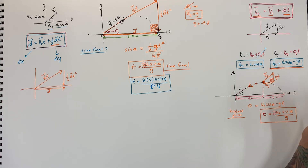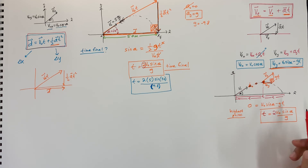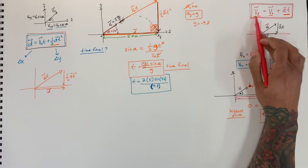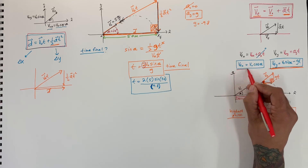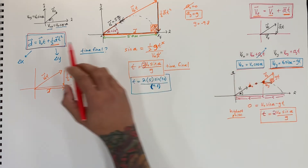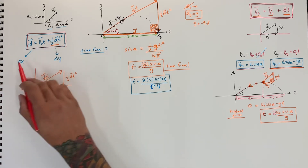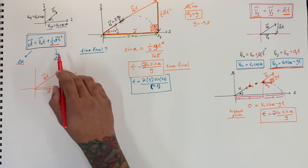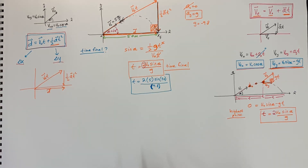So these two equations — the displacement vector equation and the velocity vector equation — are the most important tools for projectile motion problems. Let's do some more examples to get comfortable. Remember: the velocity equation handles V-final in both X and Y, and the displacement equation handles displacement in both X and Y, as shown in the previous video.